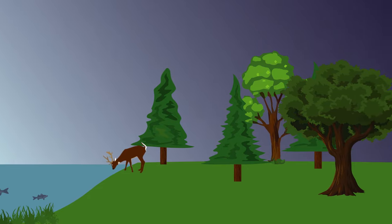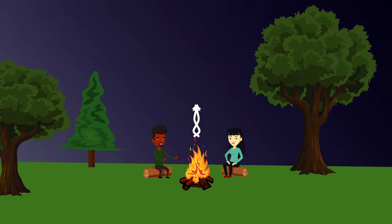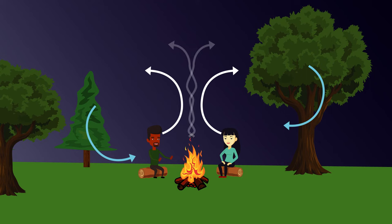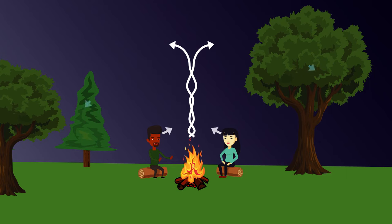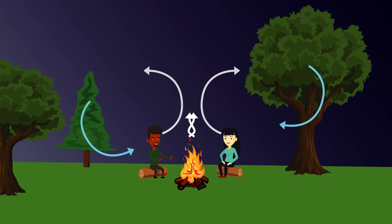The carbon cycle is nature's way of reusing carbon atoms, which travel from the atmosphere into organisms in the Earth, and then back into the atmosphere, over and over again.